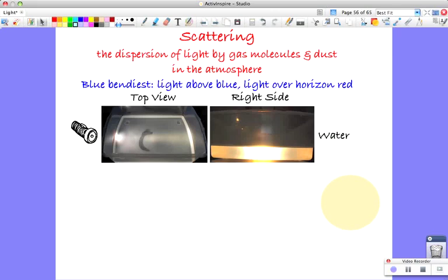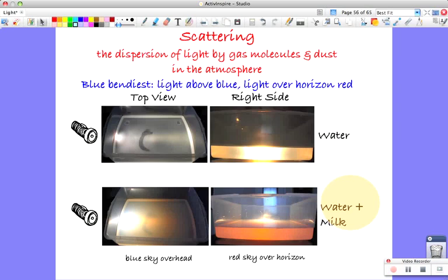What you do to simulate the gas particles is add about a cup of milk. This makes it a bit cloudy. You shine the torch through, and this is really interesting: when you're looking from above, the area where the torch is shining through the water has a bit of a bluish tinge compared to without the milk.